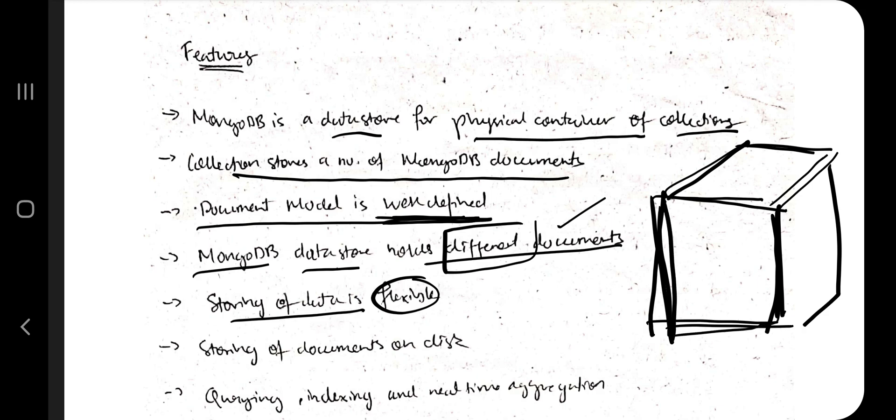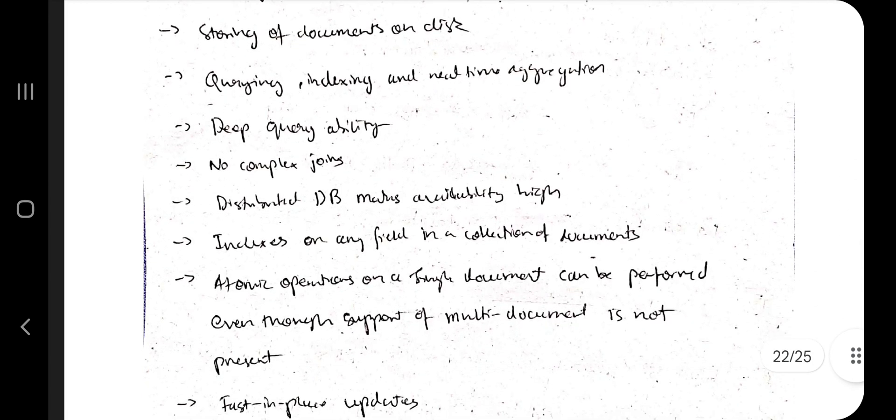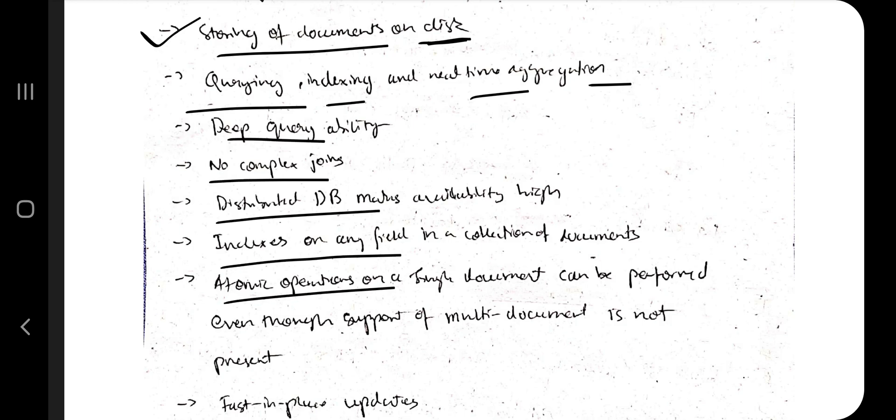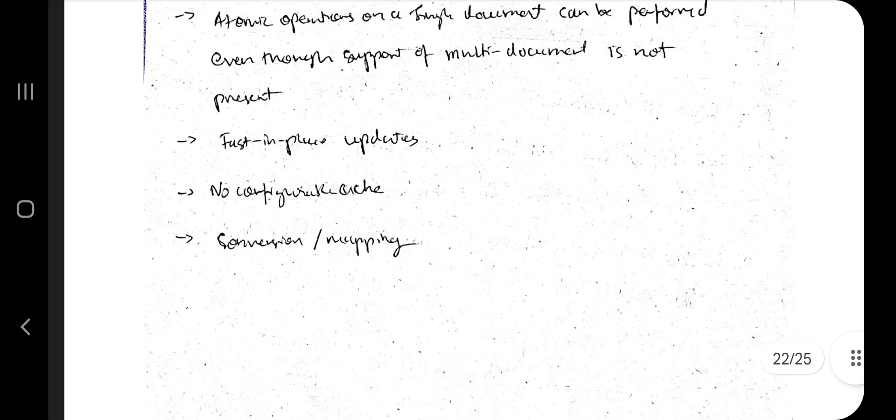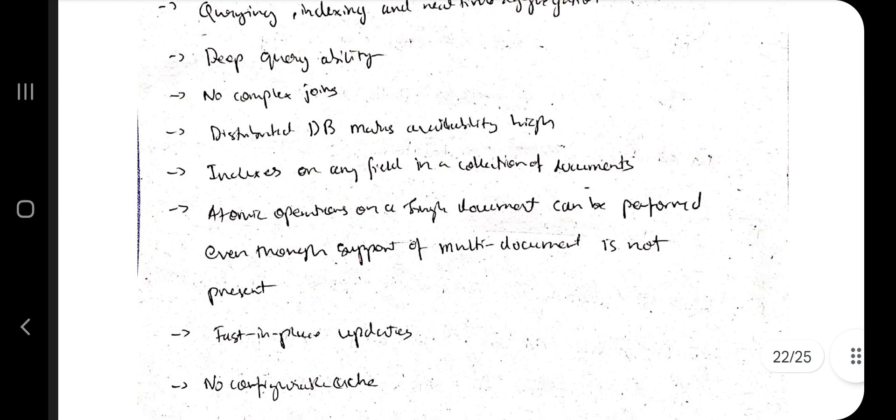Storing of data is flexible - the box is flexible, you can change the shape. At least five you have to mention. The rest you can quickly go through: storing of document on disk, querying, indexing - these are the operations. Deep query, no complex join, distributed database, index, atomic operations, fast in-place updates, configurable cache and conversion mapping. Remember the five and write the rest in your own words.